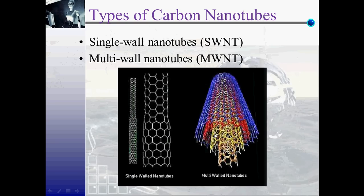There are two types of carbon nanotubes. The first are single-wall nanotubes. They have a single cylindrical wall, and most of them have a diameter of close to one nanometer.